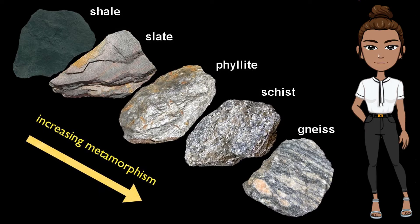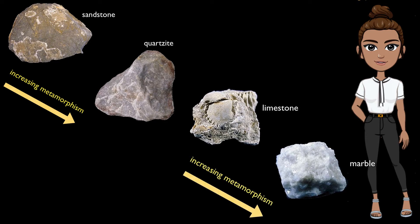Gneiss has more bands of minerals as a result of intense pressure. If gneiss is added with more heat and pressure, it will melt into magma and lava, and then become an igneous rock. Non-foliates have no cleavage at all. Examples of non-foliates are quartzite and marble. Quartzite is made up of sandstone that has been metamorphosed. Marble is metamorphosed limestone.